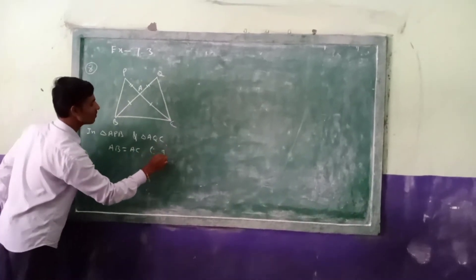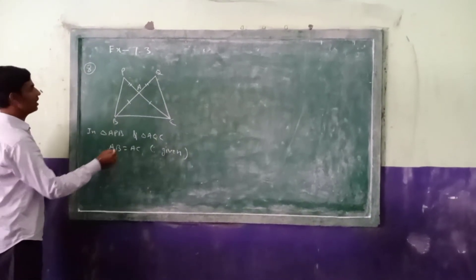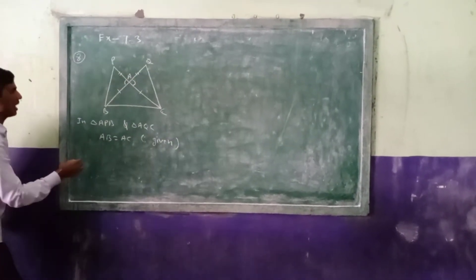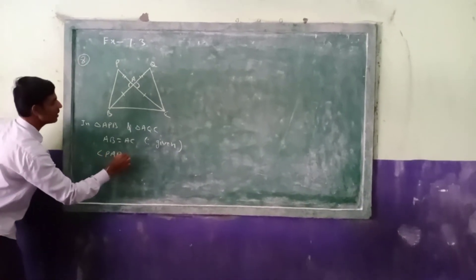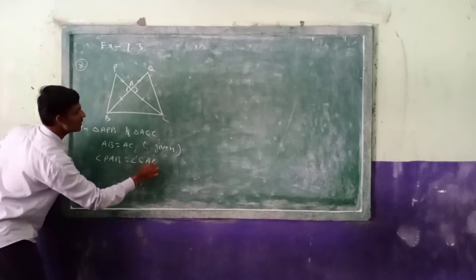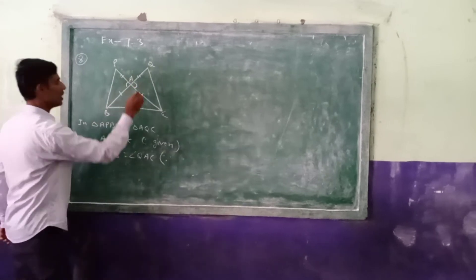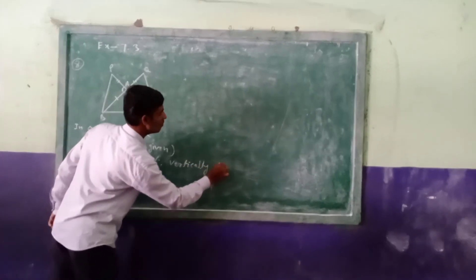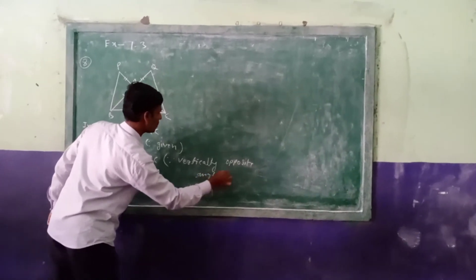Next, we can write here angle PAB equal to angle QAC. What is the reason? Vertically opposite angles. These both are vertically opposite angles.